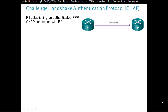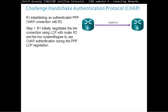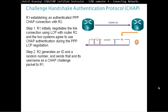Challenge Handshake Authentication Protocol, CHAP: R1 establishes an authenticated Point-to-Point Protocol CHAP connection with R2. Step 1: R1 initially negotiates the link connection using LCP, and the two systems agree to use CHAP as authentication during the PPP LCP negotiation. Step 2: R2 generates an ID and a random number, and sends its username as a CHAP challenge packet to R1 — essentially saying, can you create a hash using this ID, this random number, and I'll send my username so you can check my password.